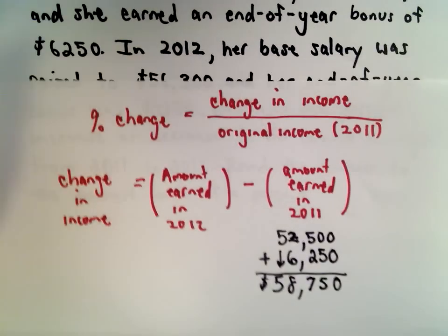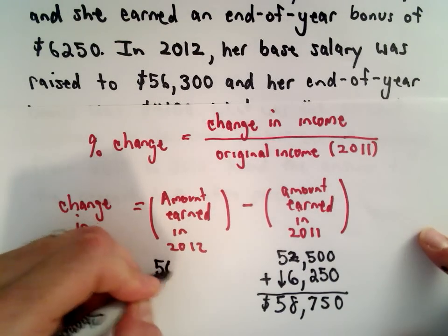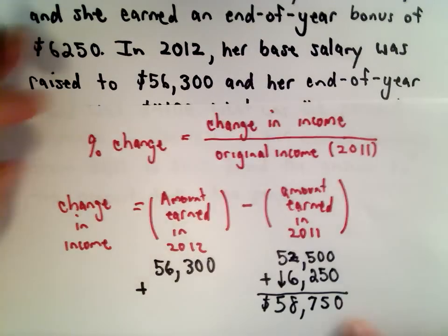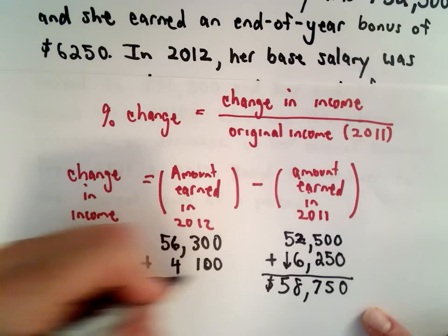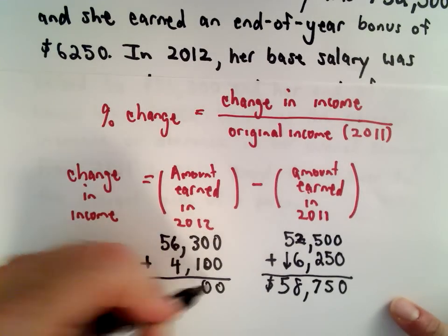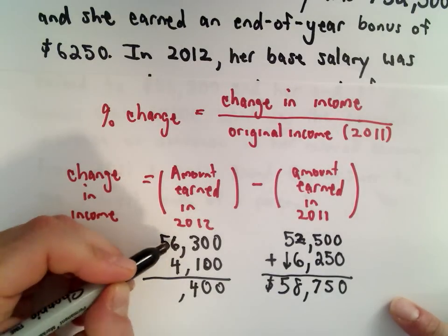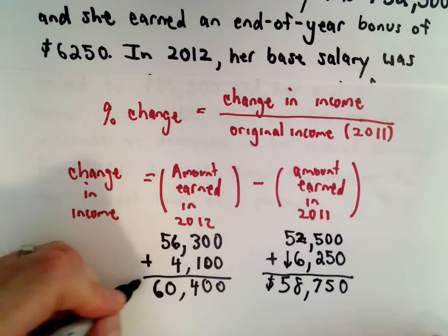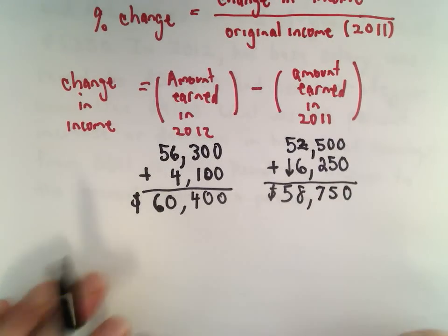Okay, so let's figure out how much she earned in 2012. So there her base salary was $56,300. We'll add to that $4,100. So again, 0 and 0 is 0, 0 and 0, 3 plus 1 is 4, and then we have 56 plus 4, that'll give us 60. So in 2012, she made a total of $60,400.